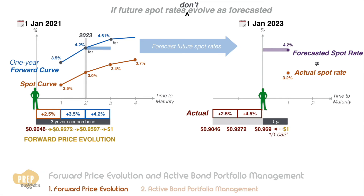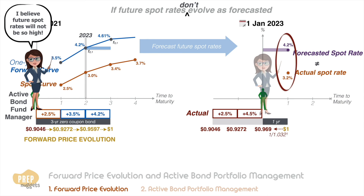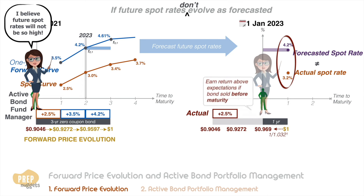This illustrates an opportunity for active bond fund managers. If the manager expects future spot rates to be lower than what is forecasted by the forward rates, she should buy bonds, as the fund stands to profit more if that happens. In other words, if what she believes turns out to be true, she can get a return above expectations if she sells the bond before maturity.